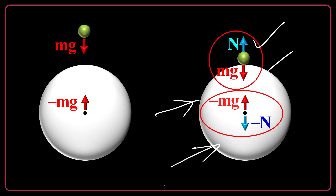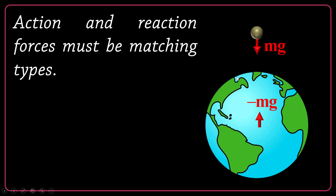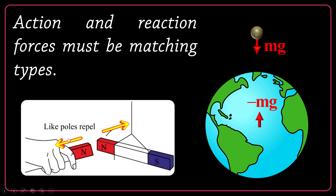A big mistake is to say N is the reaction of mg. No — N is not the reaction of mg. N is the reaction of negative N. The reaction of mg is negative mg, exerted toward the center of the earth. Also, action and reaction forces must be matching types — they must have the same nature. For example, mg and negative mg are both gravitational forces. Similarly, with two bar magnets repelling each other, both action and reaction forces are magnetic. It's impossible to have an action as a gravitational force and the reaction as a magnetic force. They always have matching types.